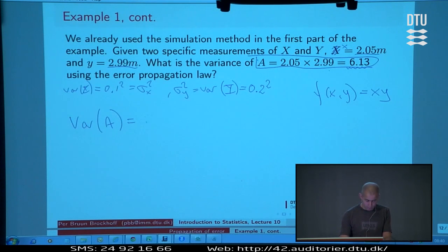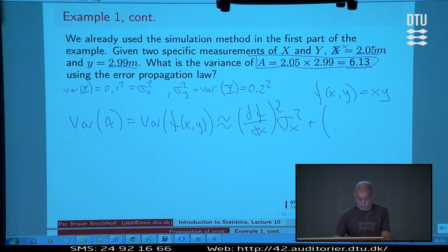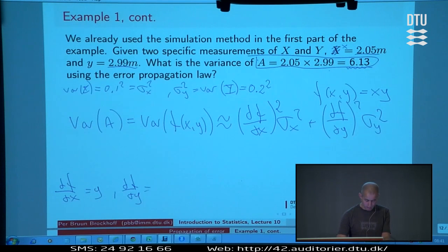To find the variance of this function, if we apply the error propagation rule, we should take the derivative of f with respect to x and square it times the variance of x, and then take the derivative of f with respect to y and square it. What is the derivative of f with respect to x? There is just a constant y here, so the derivative of f is actually y. And the derivative of f with respect to y becomes x because if you see this function of y, there's just a constant times y and the constant is named x.